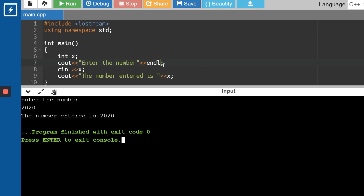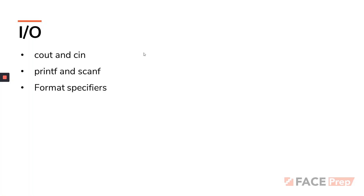Now let's move to the next part: printf and scanf. Even though they are not totally a part of C++, C++ is a derivative or advanced version of C, so whatever predefined functions were used in C can be used in C++ as well — provided you use the specific header files or namespaces required for those predefined functions to work.